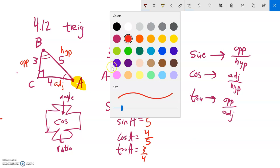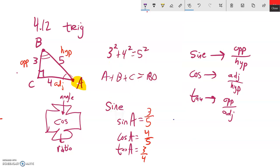Cool. Let's do it again, but with a different angle. Let's do it with angle B. So let's find sine of angle B, cosine of angle B, and tangent.